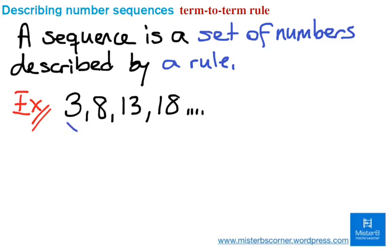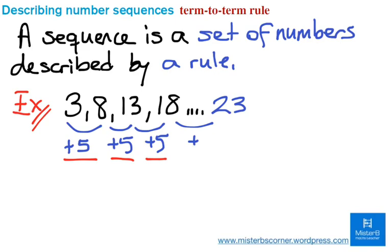I can see that the difference is always 5 between those terms of the sequence. So, what happens is, if I add 5, I find the next term. So basically, the next two terms, for example, would be like 23 when I add 5 to 18, and then 28 when I add 5 to 23. This goes on like that.